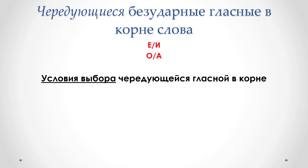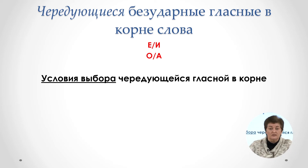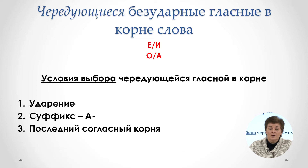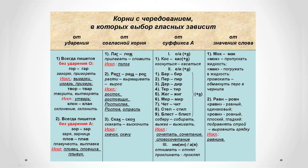Учли условия выбора, чередующиеся гласные в корне слова — это важно. Сегодня мы увидим, как таблица поможет нам в работе. Четыре условия: ударение, суффикс «а», последние согласные корня и значение слова. Примерно так выглядит данная таблица.